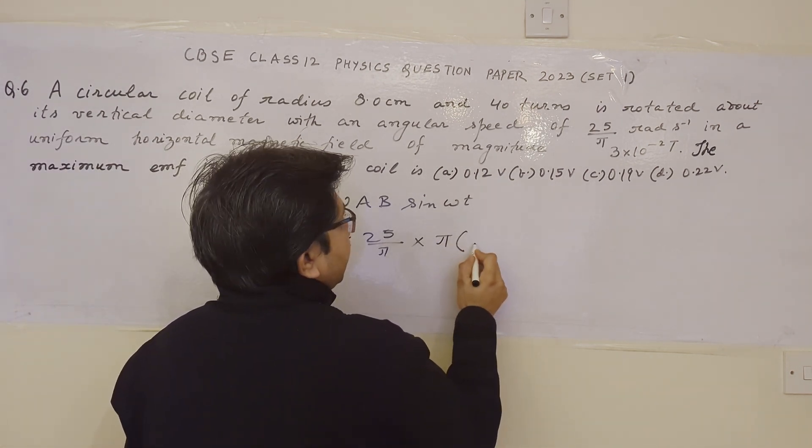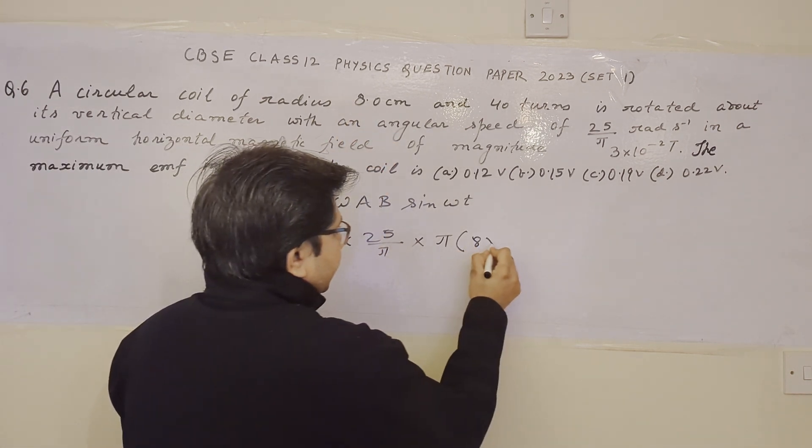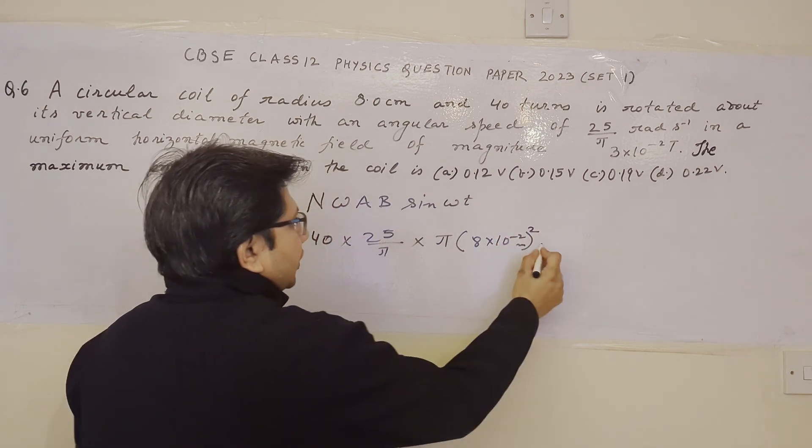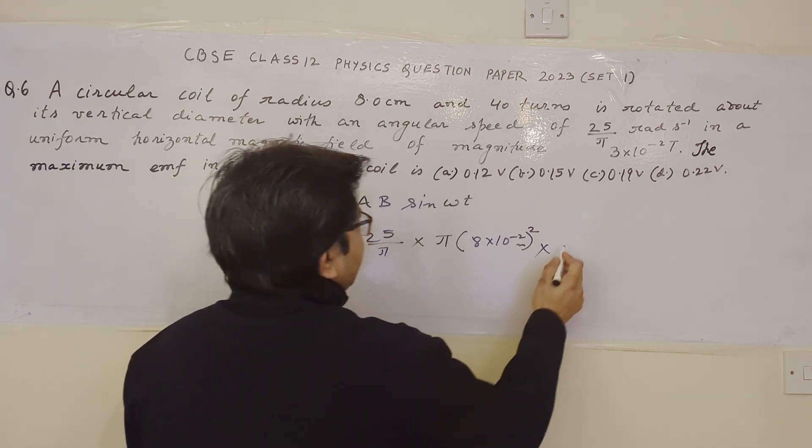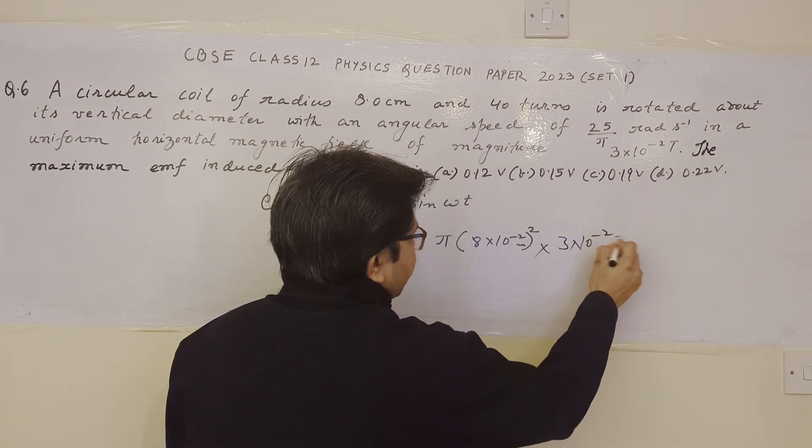So it is pi and r, r is the radius. The radius in meters is 8 into 10 to the power minus 2 meters and its square. And then the magnetic field B is given as 3 into 10 to power minus 2 tesla.